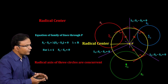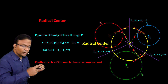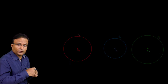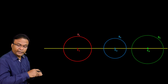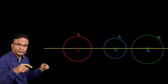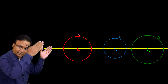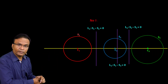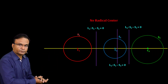However, here we have taken three circles such that their centers are not collinear. If you draw three circles with collinear centers, then the radical axes will be parallel and we will not have a radical center. Thank you.